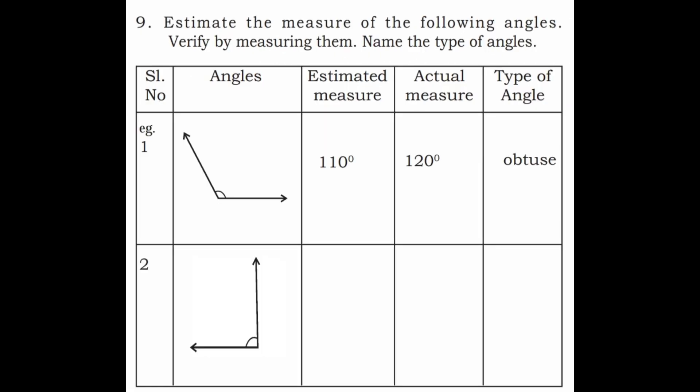Ninth question: estimate the measure of the following angles, then verify by measuring them and name the type of angle. First look at each angle and estimate, then use the protractor to get the exact measurement, and mention which type of angle it is.